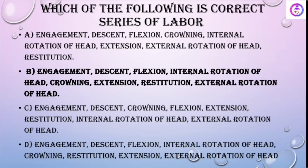Which of the following is the correct series of labour? The sequence of labour starts with engagement and descent, which happens throughout the process. Then comes flexion, followed by internal rotation of the head.